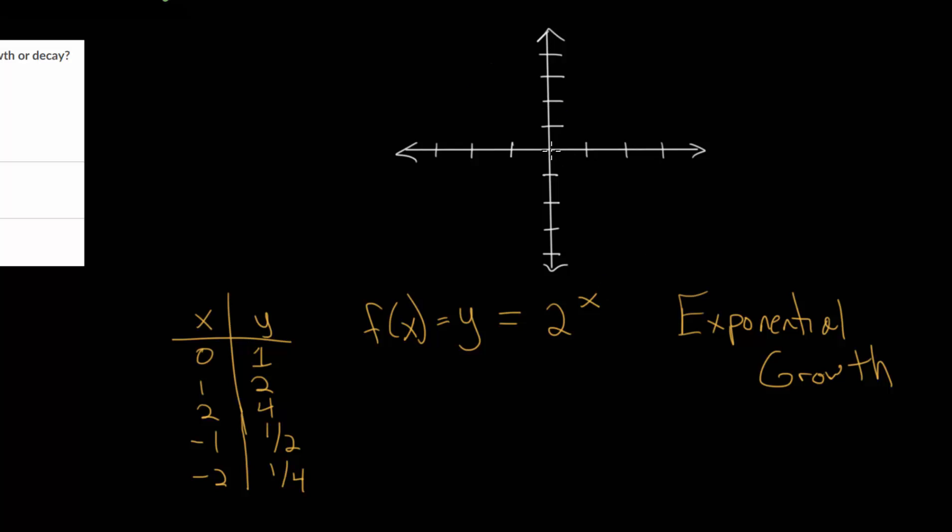So if we plug in the point 0, 1 right there, at 1, 2, at 2, 4. If we did 3, it would be all the way up off the screen at 8. And if we do negative 1, we know we're at 1 half. If we do negative 2, we're at 1 fourth. So let me draw in this curve. And you can get a general idea of what this looks like.